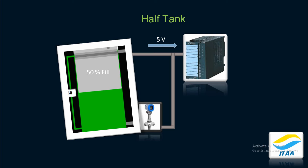If the level is now 50%, what will be the value going towards the input card of the PLC? That will be 5V — because 5 is exactly half of 10, and 50% is exactly half of 100%. So it will be 5V going to the PLC, and the PLC will understand that 5V means 50% filled in the oil tank. For 100% full, the signal from the transmitter to the input card of the PLC will be 10V, because 10V is the maximum. So according to the varying level, a signal in the range of 0–10V is sent to the PLC.